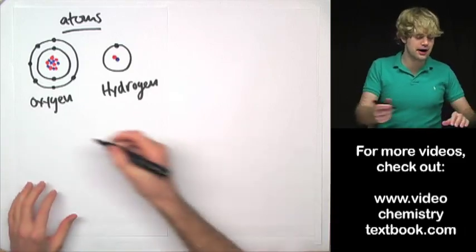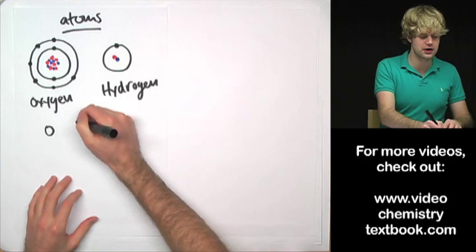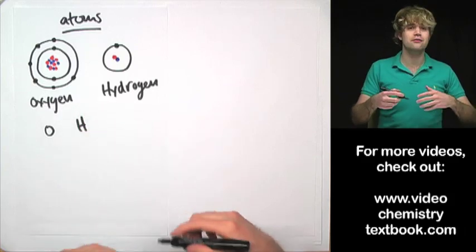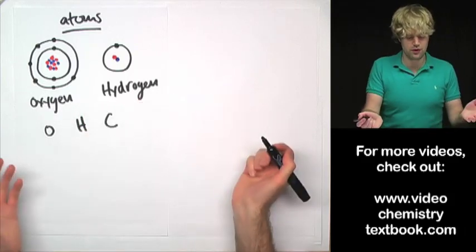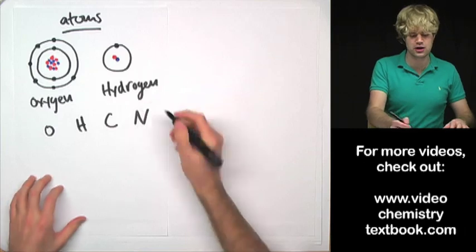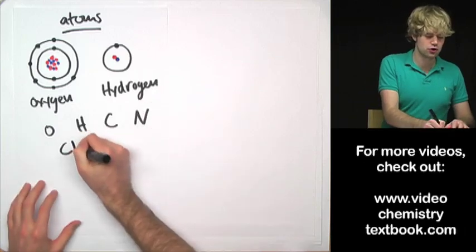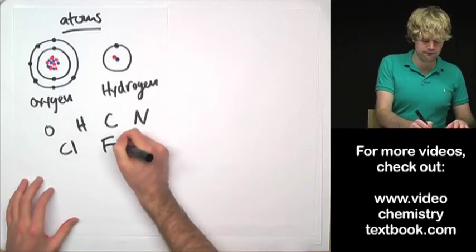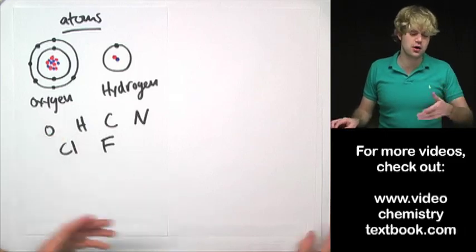So when we want to talk about oxygen, we write an O. For hydrogen, there's an H. We have carbon atoms represented by a C. We have nitrogen atoms represented by an N. Chlorine with a Cl. Fluorine with an F. And so on and so forth.